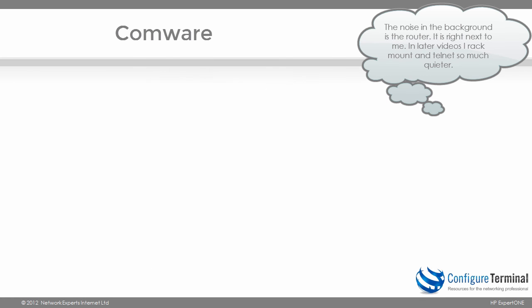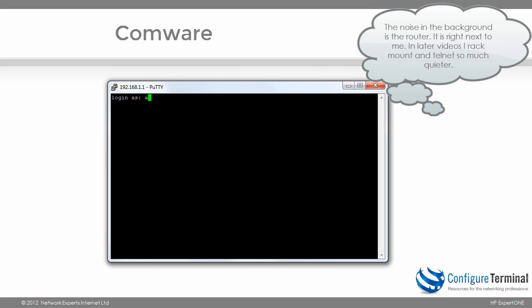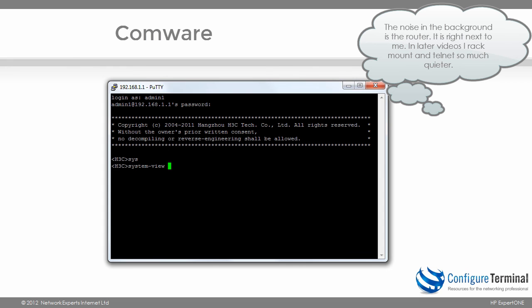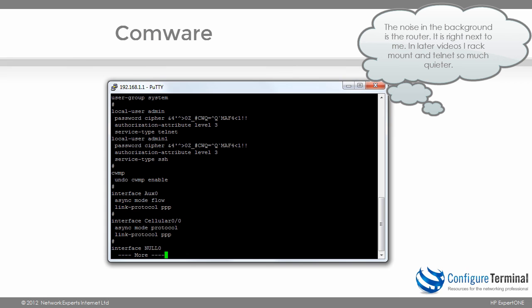I'll quit and open another SSH session to 192.168.1.1, logging in as admin with password hp. Now when I type 'system view' I immediately get privilege level 3. I can run 'display current-config' and use the forward-slash search option — available on both Cisco and HP A-Series devices — to search for a keyword rather than paging through the full configuration. As you can see, the authorization attribute for admin1 is set to level 3. However, admin1 can only Telnet to the device, not use SSH.